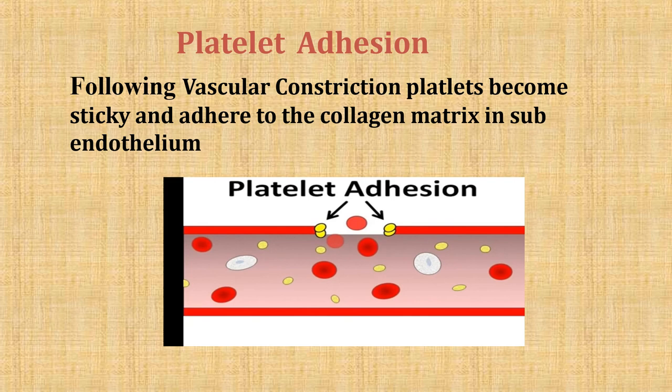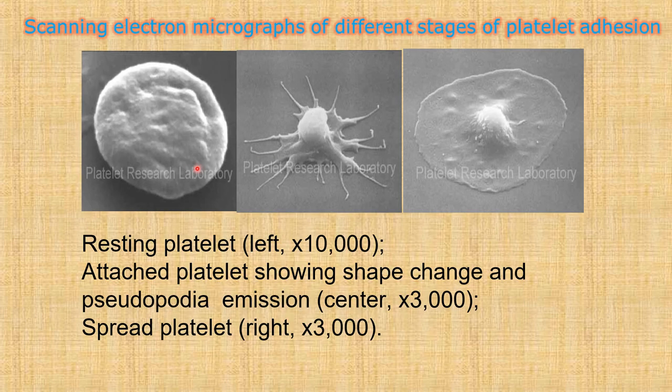An important point: coagulation factor VIII circulates in plasma bound to von Willebrand factor. Factor VIII levels cannot be maintained in the absence of von Willebrand factor. Von Willebrand factor is essential for adhesion and is synthesized from megakaryocytes and vascular endothelial cells. During adhesion, the resting platelet undergoes shape change with pseudopodium extension to become the spread platelet.